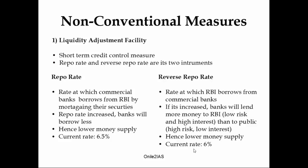Reverse repo rate is just the opposite — it is the rate at which RBI borrows from commercial banks. In case of inflation, RBI increases this reverse repo rate. If the reverse repo rate is increased, banks raise interest rates on loans to customers because they receive high interest from RBI, which is less risky lending. Banks will be encouraged to lend more to RBI than to the public, thus reducing the supply of money in the economy. The current reverse repo rate is 6%.